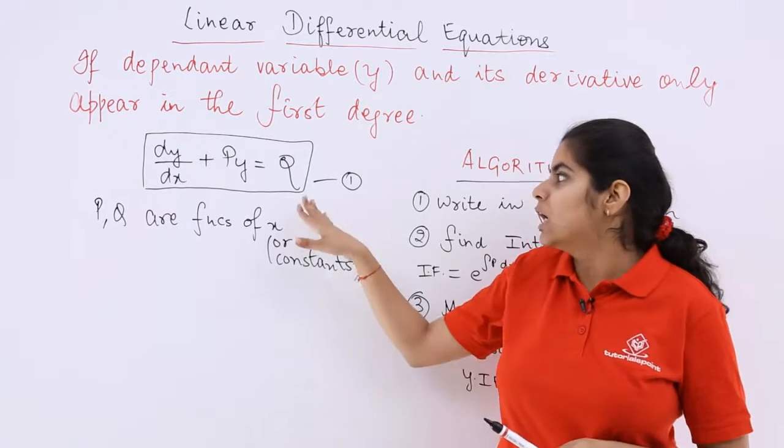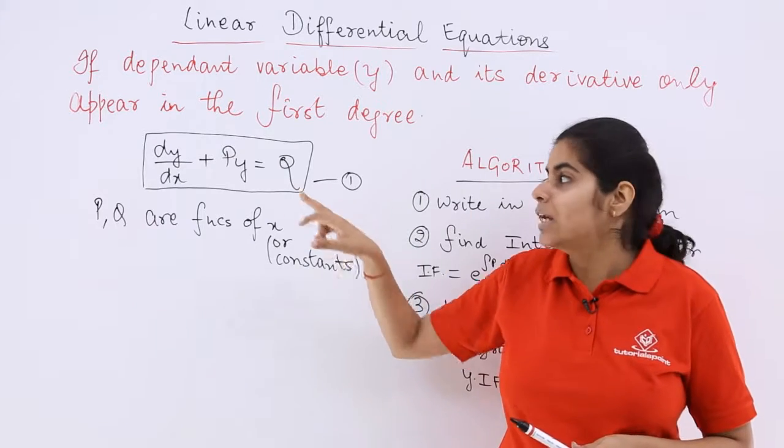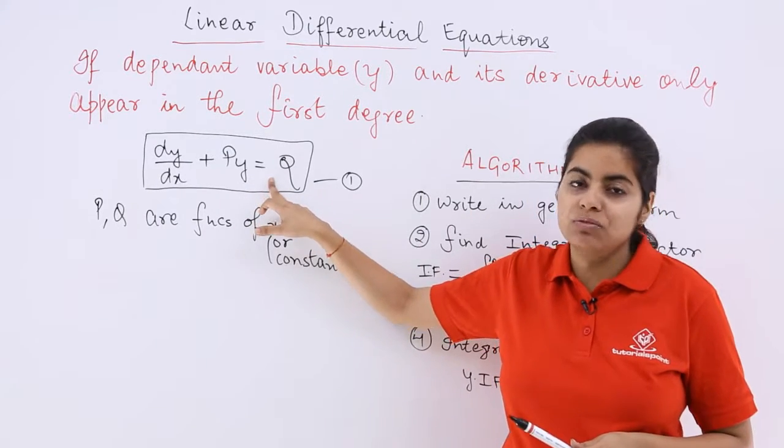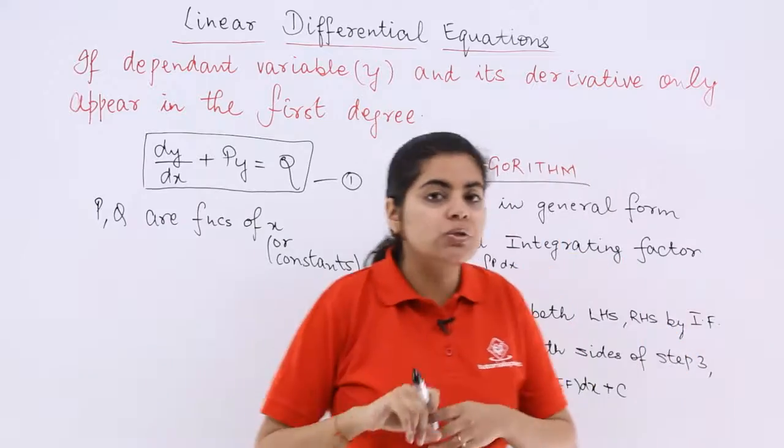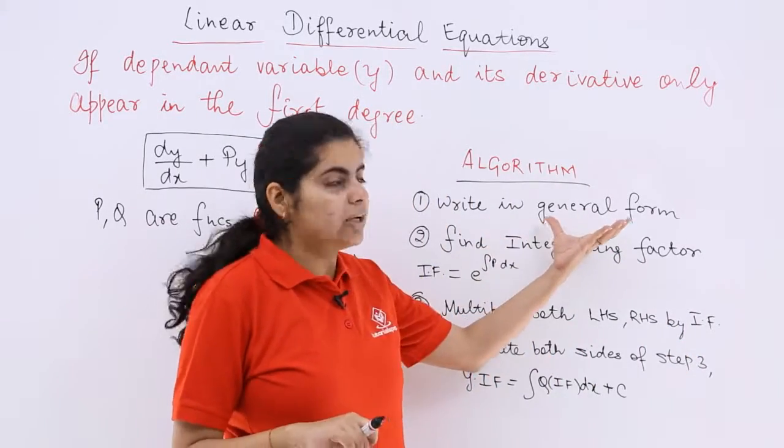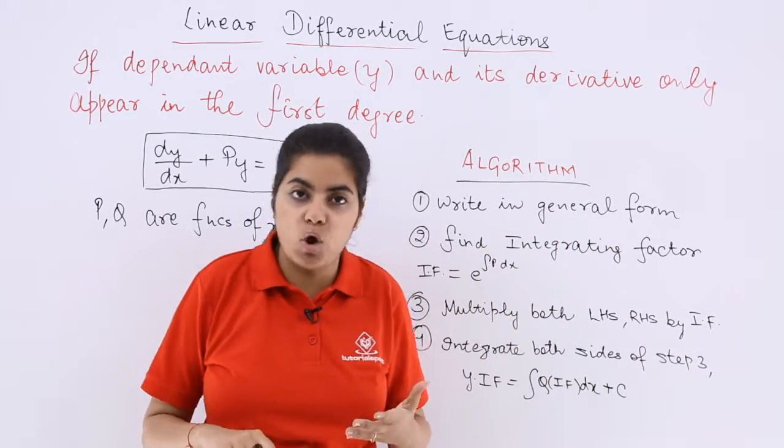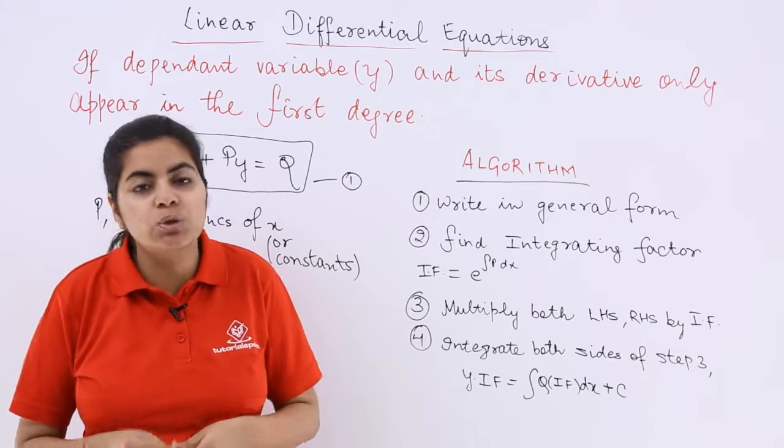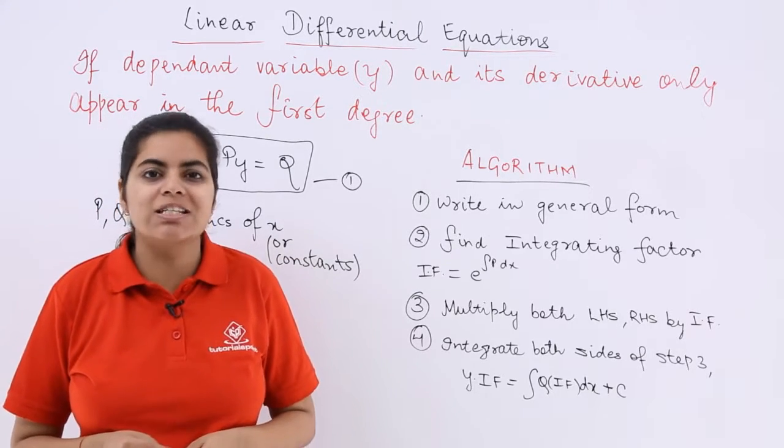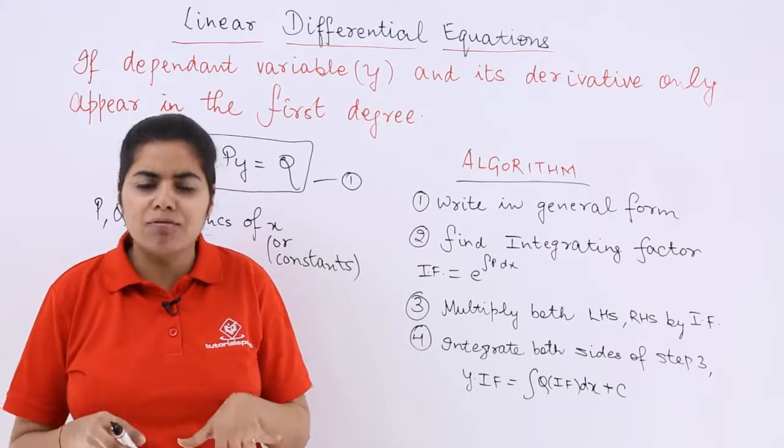What we do is first of all write the question in the form of the general equation which we started in the previous video. Step one would be: write whatever is given in the general form dy/dx + py = q, where p and q are constants or functions of x.